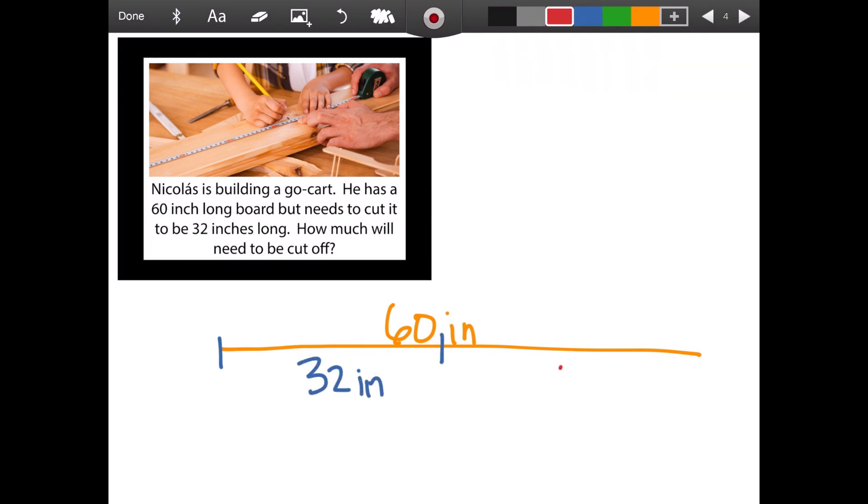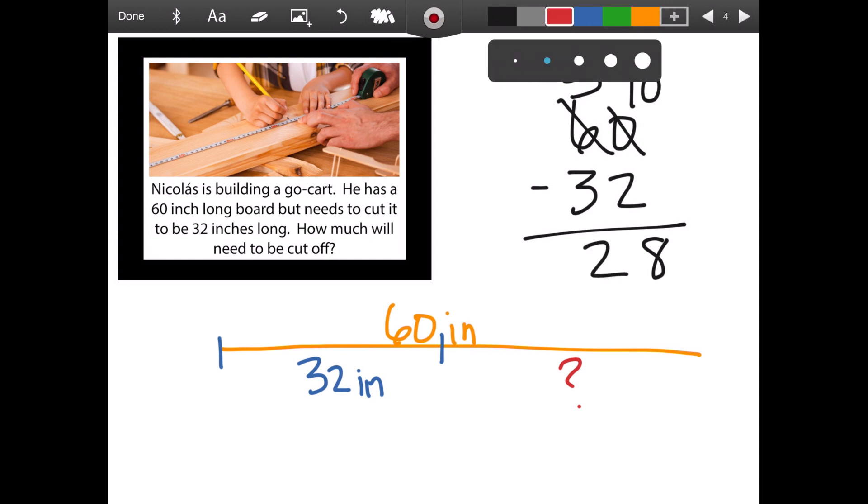So how much needs to be cut off? We can do 60 minus 32 to solve for that part of how much needs to be cut off. Regrouping. Decompose the 10 to regroup into the ones place. 10 minus 2 is 8. 50 minus 30 is 20. That means he will need to cut off 28 inches.